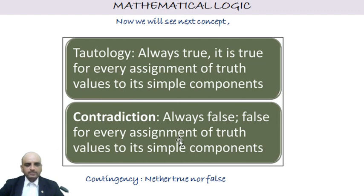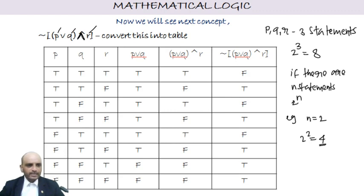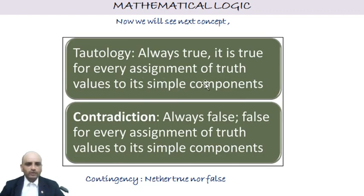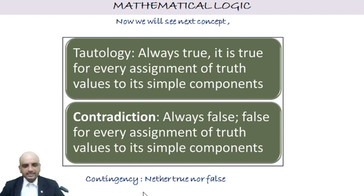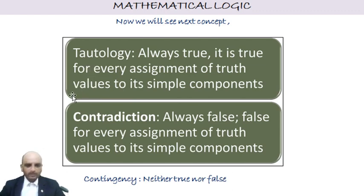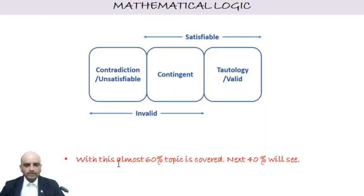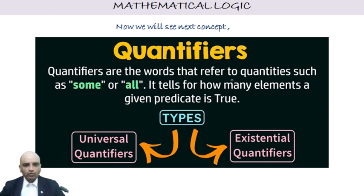From the truth table results: if all results in the final column are true, it is a tautology — always true for every assignment of truth values. If all results are false, it is a contradiction — always false. If it is neither always true nor always false, it is called contingency. A tautology is satisfiable; a contradiction is unsatisfiable; in between is contingent.